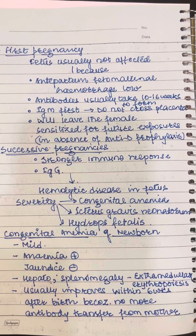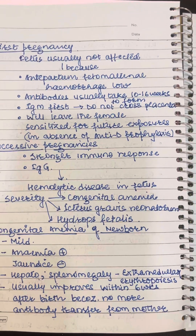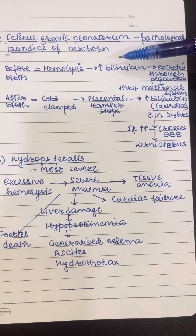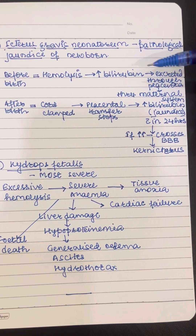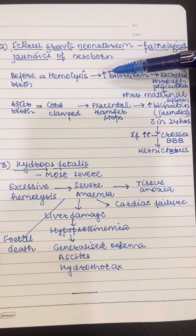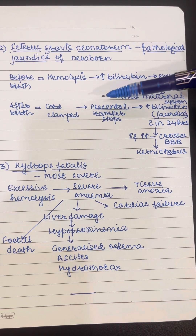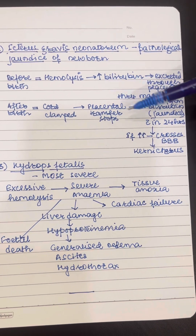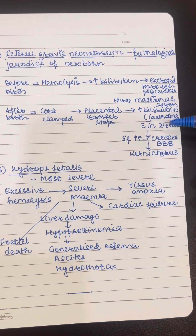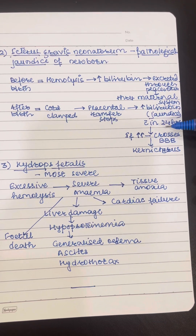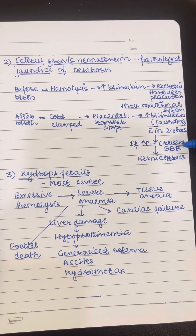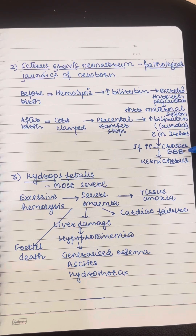But if hemolysis was higher when the baby was intrauterine, the increased hemolysis would lead to increased bilirubin which would be excreted through the placenta via the maternal system before birth. But just after birth, once the cord is clamped, placental transfer stops and it leads to high bilirubin levels in the baby, causing jaundice within 24 hours of birth — called pathological jaundice of the newborn — and it can lead to kernicterus if the levels are high enough to cross the blood-brain barrier.